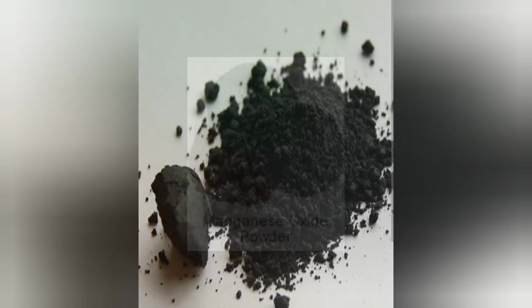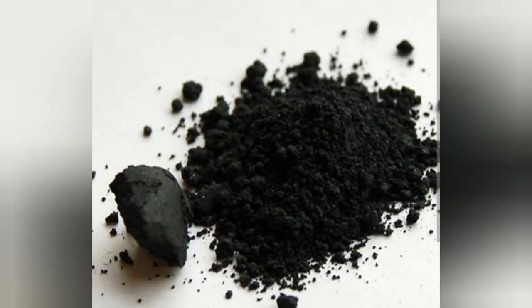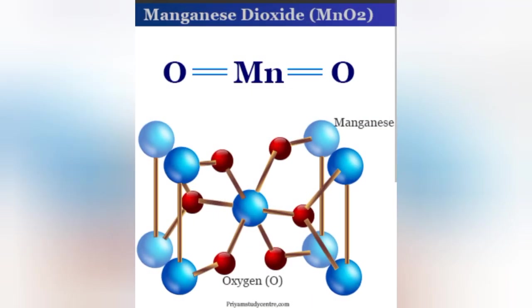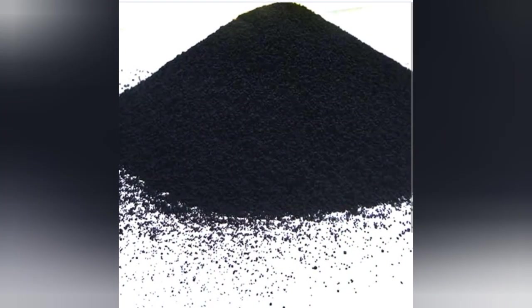Manganese monoxide can be prepared commercially by heating manganese carbonate in the absence of air, or by passing hydrogen or carbon monoxide over manganese dioxide. The most important manganese compound is manganese dioxide, in which manganese is in the plus four oxidation state, and the black mineral pyrolusite is the chief source of manganese in all its compounds.